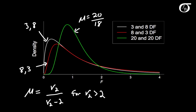The median of the F distribution depends on the degrees of freedom as well. When the degrees of freedom are equal in the numerator and the denominator, the median is equal to exactly 1. When the degrees of freedom are different — like when we had 8 and 3, or 3 and 8 — the median isn't going to be exactly 1, but it's going to be roughly somewhere in the neighborhood of 1.